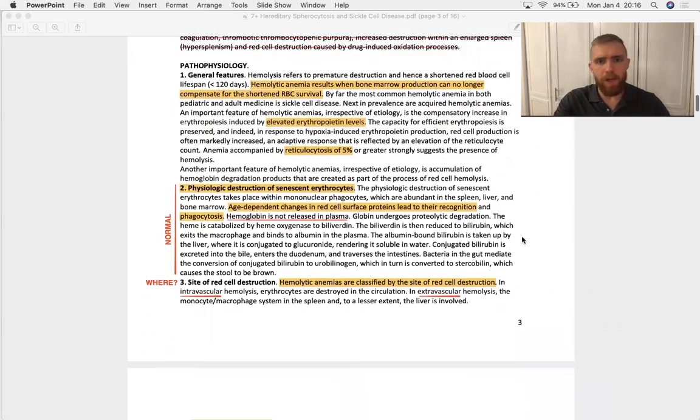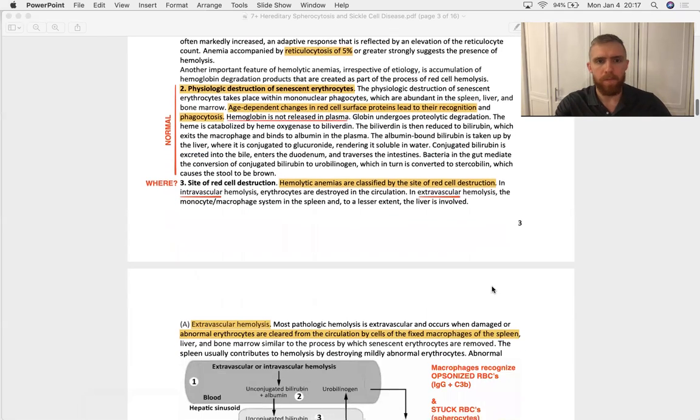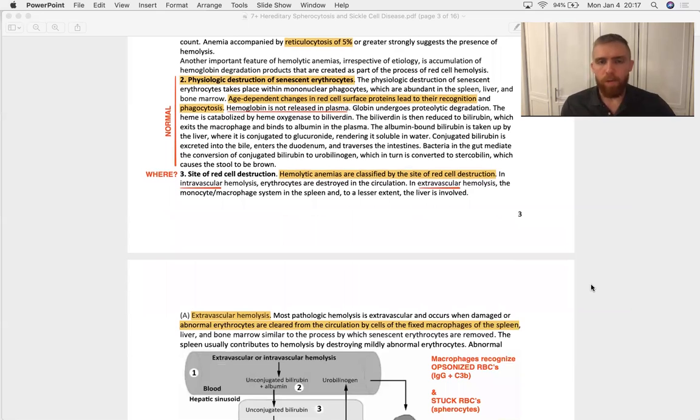General features of hemolytic anemia. You've got an elevated erythropoietin. You've got an anemia. Your EPO is going to be high. That's a hormone made by interstitial cells of the kidneys. And you're going to have a reticulocytosis reflecting an adequate bone marrow response. It is normal for red blood cells to get phagocytosed by the spleen, in the spleen rather, whenever they are of a certain age. And that's about 120 days, 4 months. Age-dependent changes in red cell surface proteins lead to their recognition and phagocytosis.